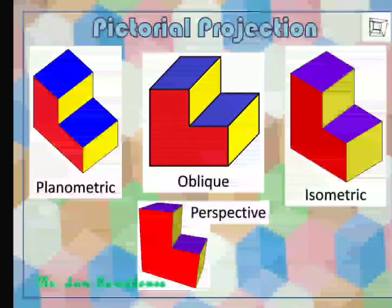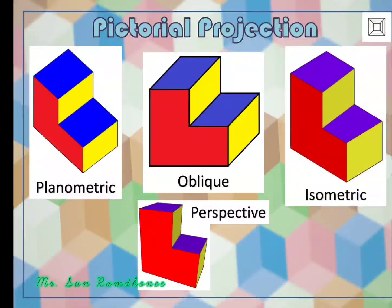When we talk about pictorial projection, it means that it is a method of giving an instant three-dimensional view of an object. So it is useful for relaying information to a person not used to reading drawings prepared in orthographic projection. As we can see below, we have planometric, we have oblique, isometric and perspective. For grade 7, we are going to study only oblique projection and isometric projection.